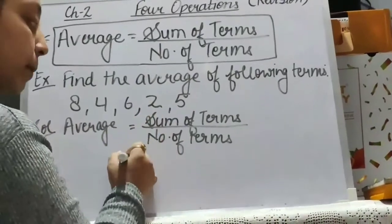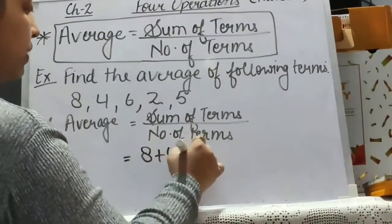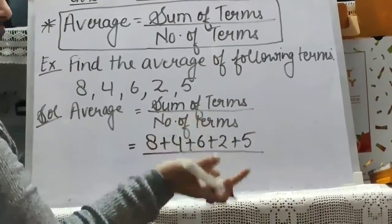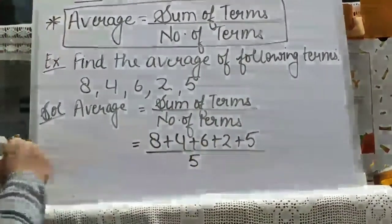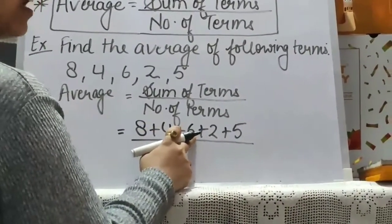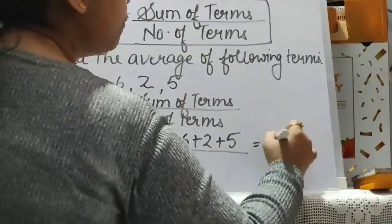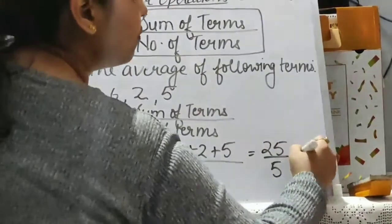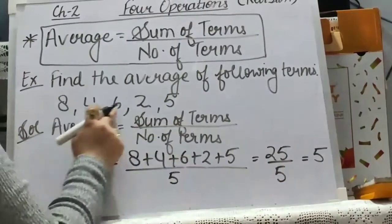The numerator will be the sum of terms: 8 plus 4 plus 6 plus 2 plus 5, upon the number of terms. How many terms are there? 1, 2, 3, 4, 5 — so there will be 5. After writing it you will get: 8 plus 4 is 12, plus 6 is 18, plus 2 is 20, plus 5 is 25, upon 5. When you divide 25 by 5 it will be 5. So we can say 5 is the average of these terms.